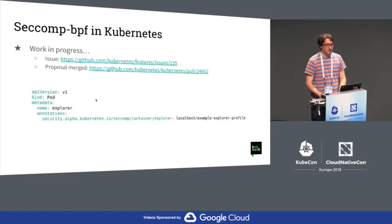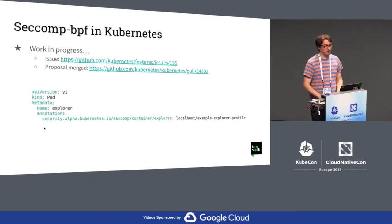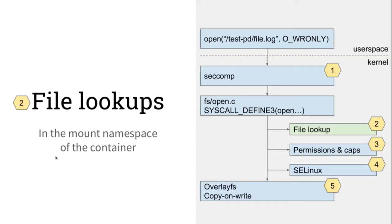The same thing applies to Kubernetes. It's a work in progress in Kubernetes that's actually working, but the issue is not closed because at the moment it's defined as an annotation in a pod.yaml file. That's a feature that exists for a long time, I think since Kubernetes 1.3 or 1.4. But on the issue they discuss about making it a proper property.